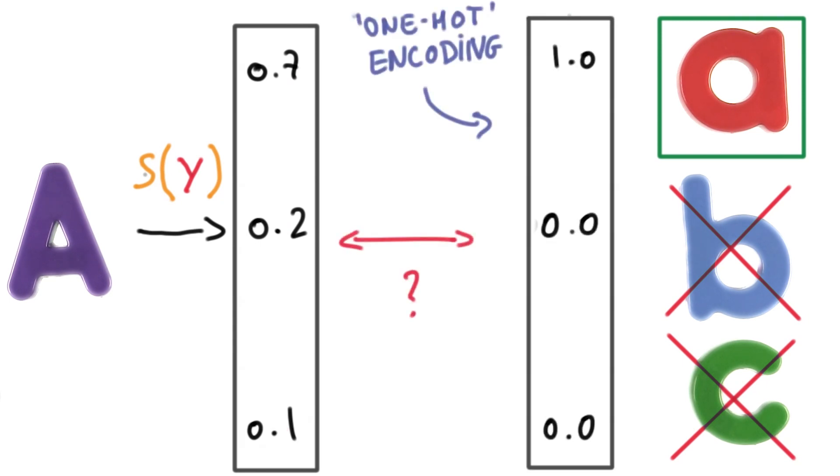Each label will be represented by a vector that is as long as there are classes. And it has the value 1.0 for the correct class and 0 everywhere else. This is often called one-hot encoding.